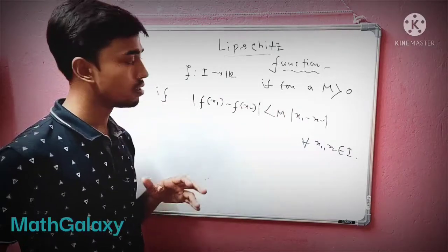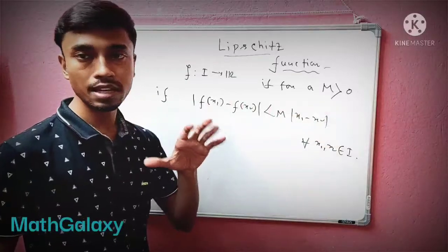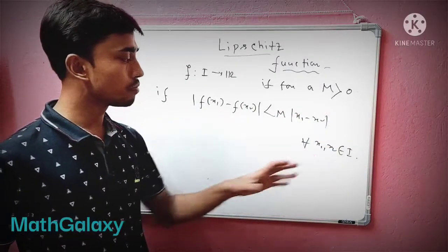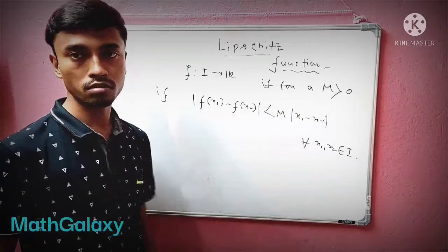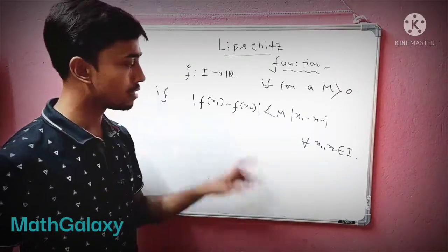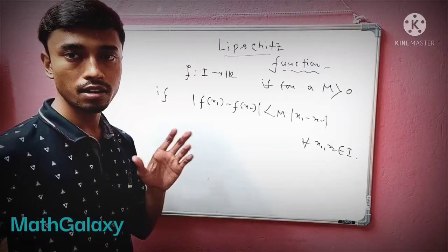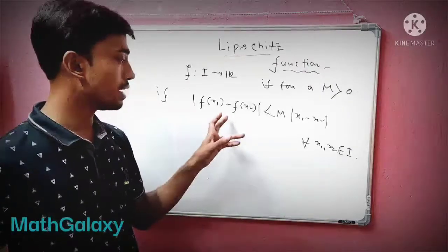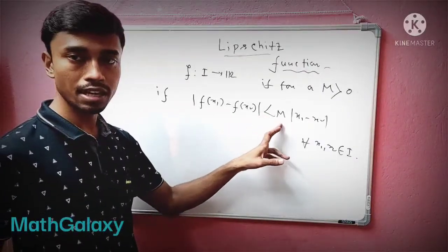And then you find all the points satisfying this condition. So |f(x1) - f(x2)| means function values at those points - the difference of the function values at those points is less than or equal to m times |x1 - x2|.